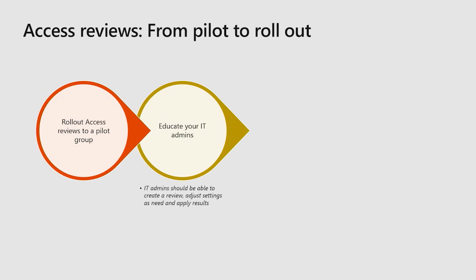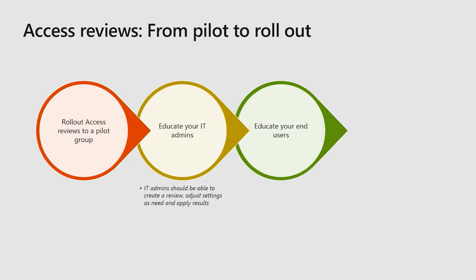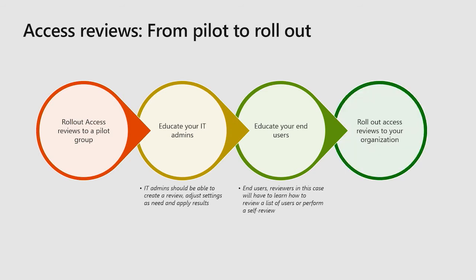Perform one and review the results and apply the changes. Then you can teach your end users on how to do an access review on a list of users in their groups or apps, or perform one as a guest. Once you're ready, you can roll out access reviews to your organization and start alleviating attestation fatigue from IT admins and streamline the process for cleaning up guests and ensure your users have appropriate access to resources. And if you encounter any questions throughout this process, you can go to our Azure Docs link and find your answers there.